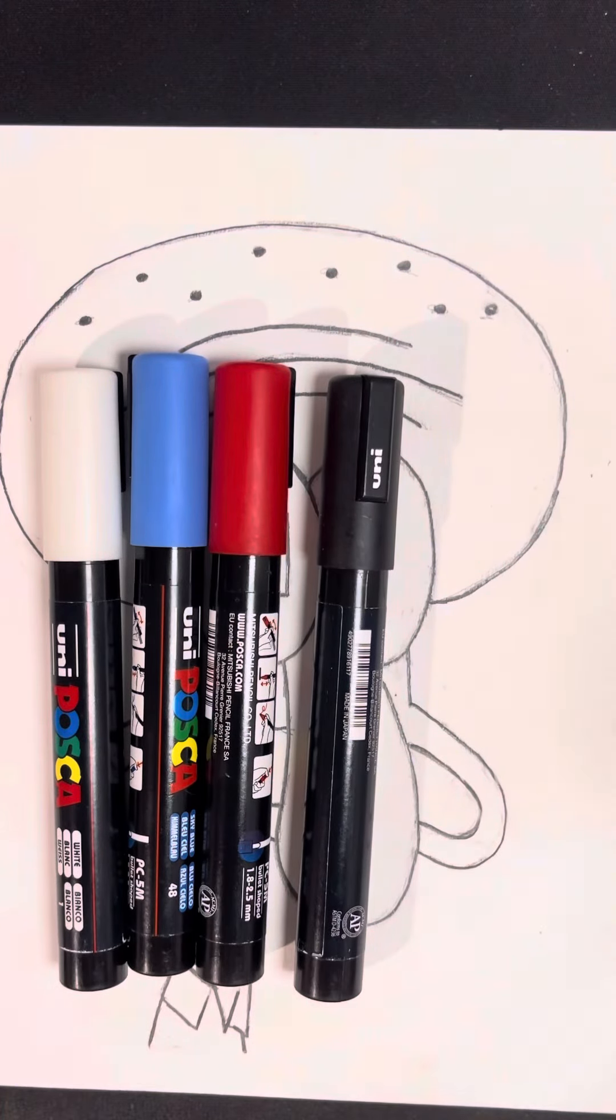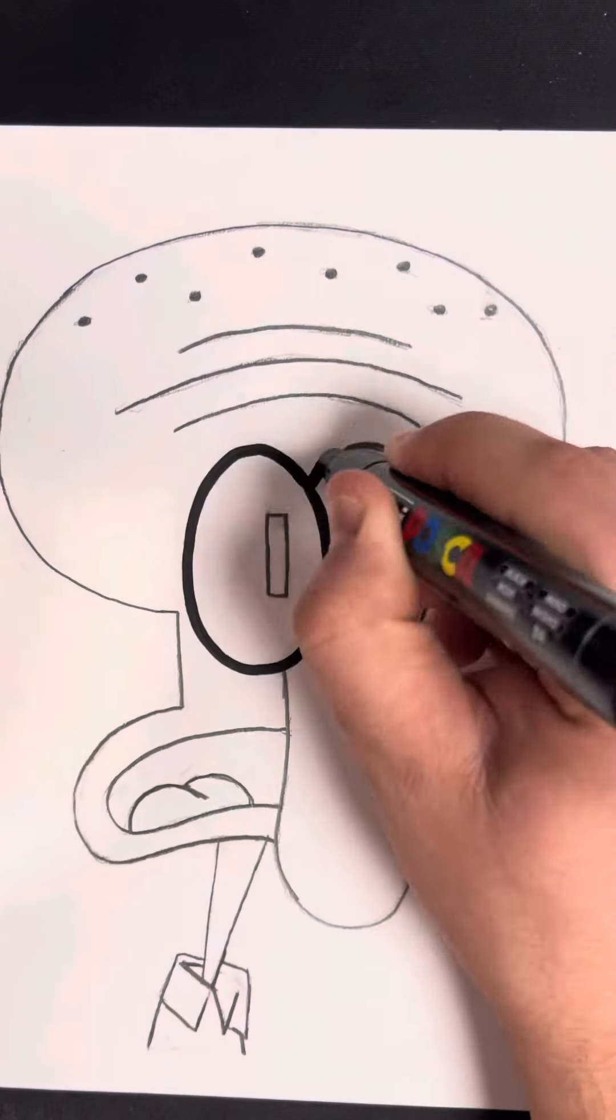So as you guys can tell I have four different markers. I have the white, black, a light blue, and a light red one.